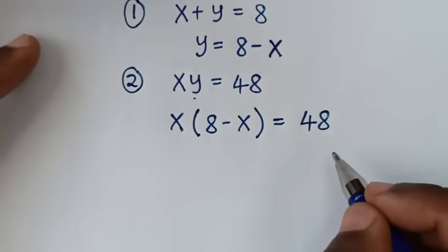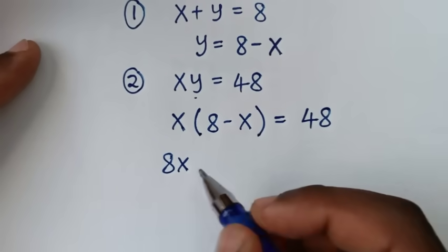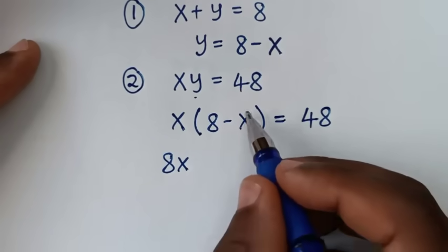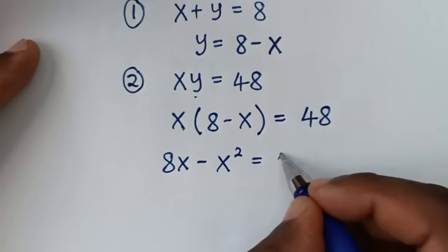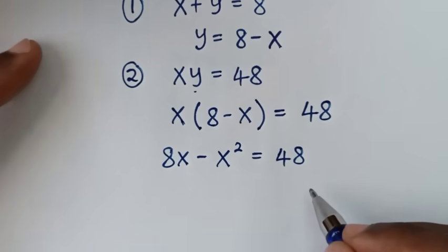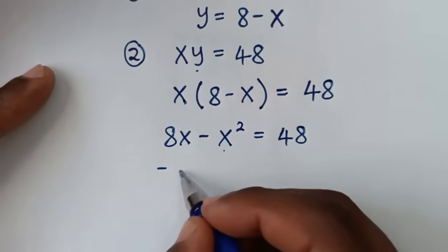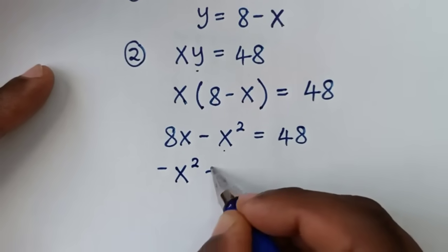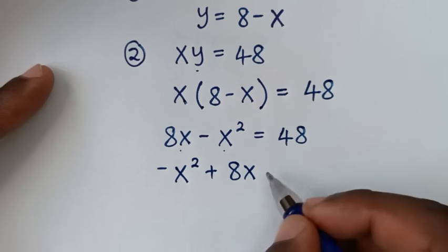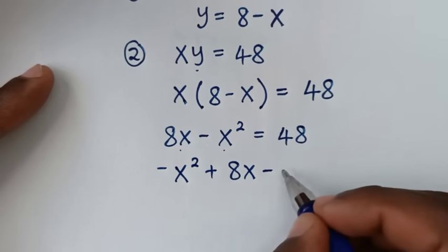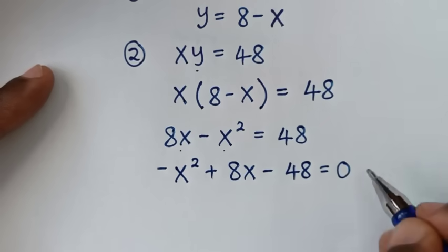Then in the next step, we'll take x times 8 is 8x, x times negative x is negative x squared, is equal to 48. Then from here it will be negative x squared plus 8x, and this 48 to take to this side will be minus 48 is equal to 0.